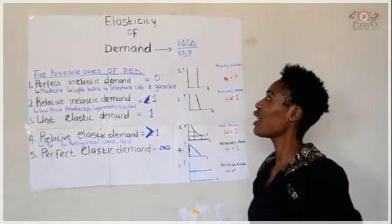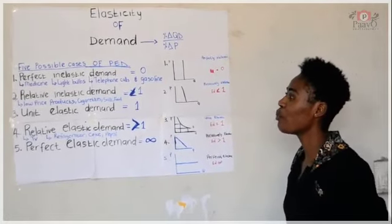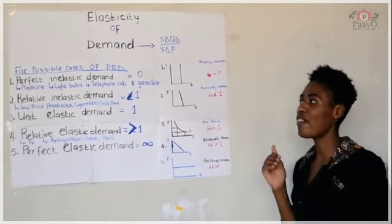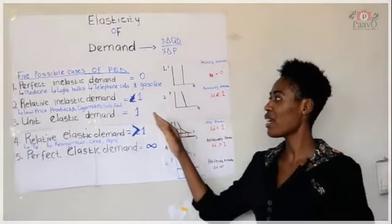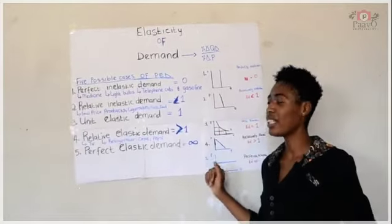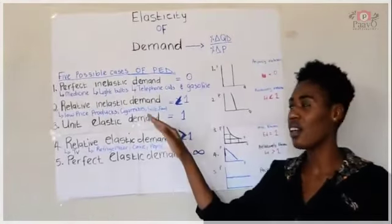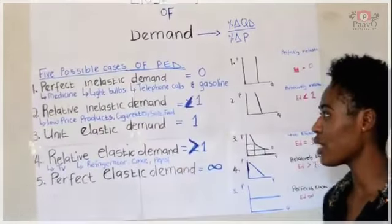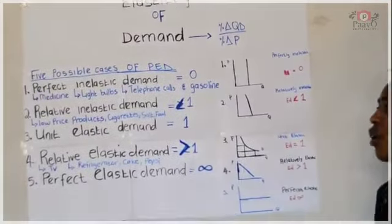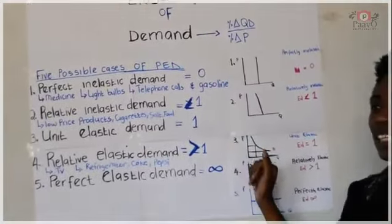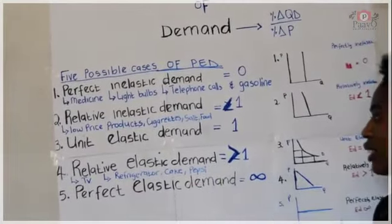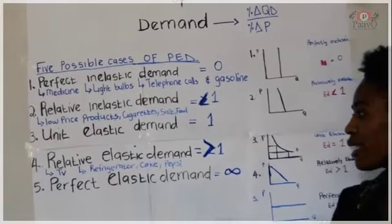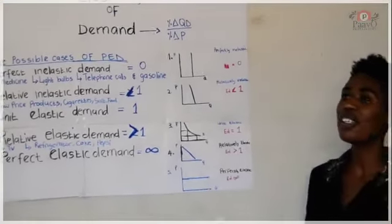In the case of elasticity of demand, we have five possible cases: perfect inelastic demand, relative inelastic demand, unit elastic demand, relative elastic demand, and perfect elastic demand.